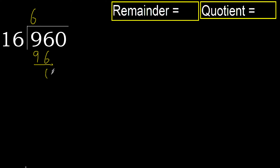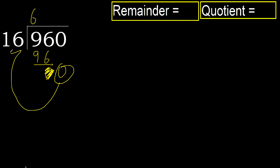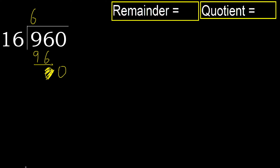Subtract 0. Eliminate 0 on this side. 0 is less, therefore next — there is no number, therefore complete. Always complete with 0.